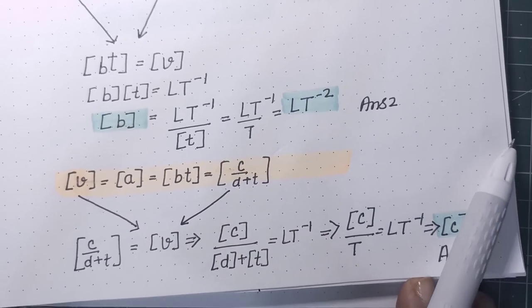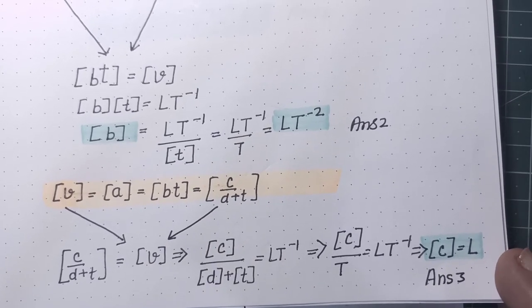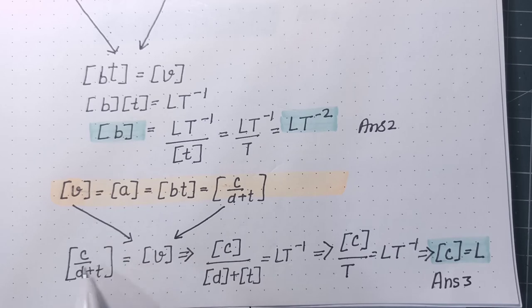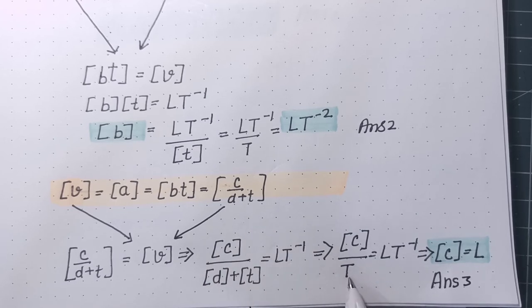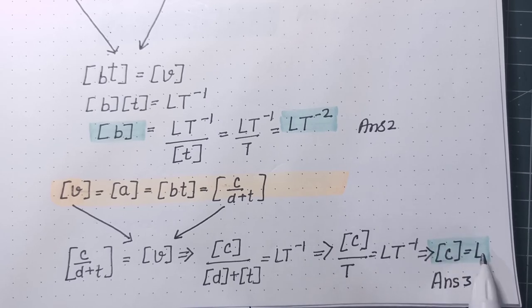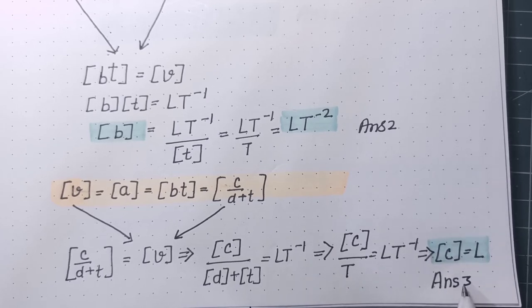After that we use this equality that V ka dimension and C upon D plus T ka dimension should be same. Matlab dimension of C upon dimension of D plus dimension of T should be LT⁻¹. But D has time ka dimension, and adding these two times gives time. So denominator ki jagah we replace with time ka symbol. Now dimension of C upon T should be equal to dimension of velocity. So C ka dimension ho gaya, taking T to other side, T ki power 1 and minus 1 goes. So remaining is only L. So C ka dimension is length ka dimension, this is answer number 3.